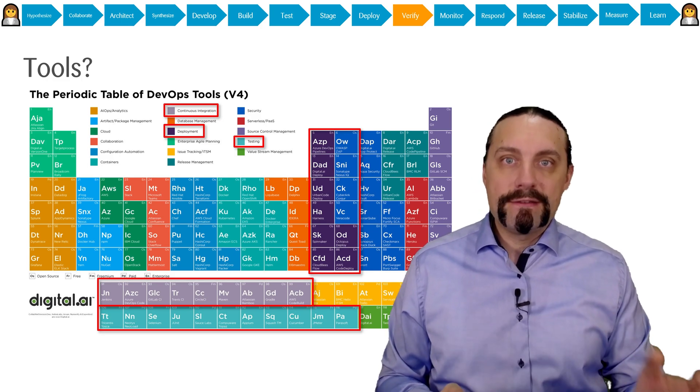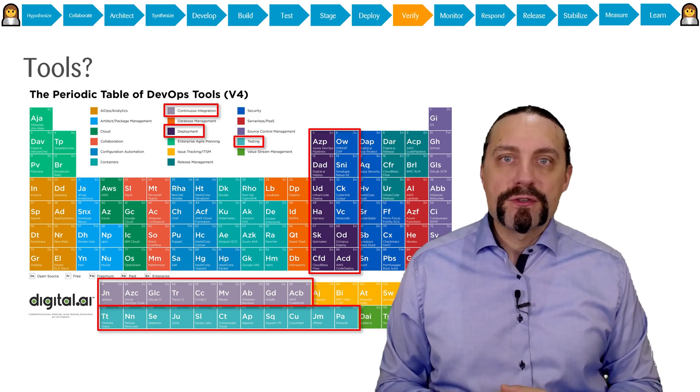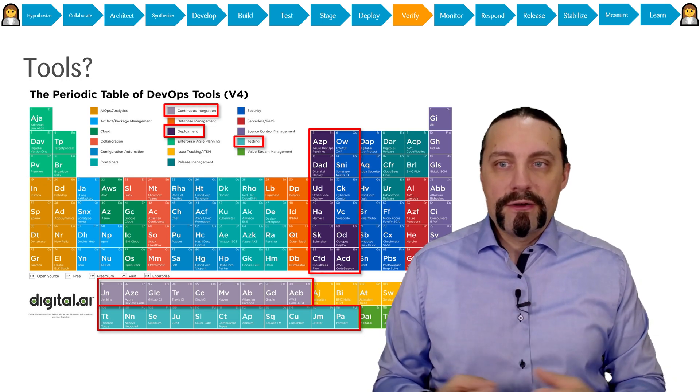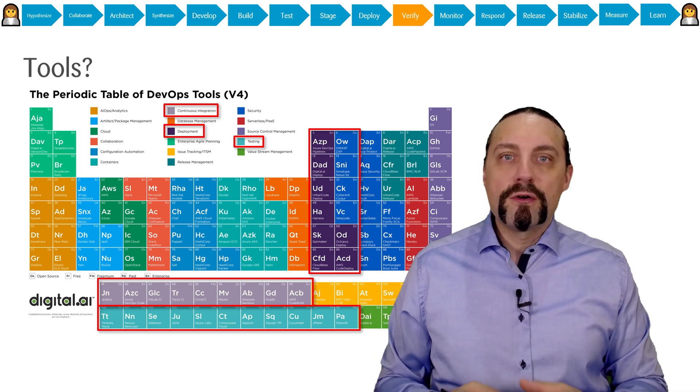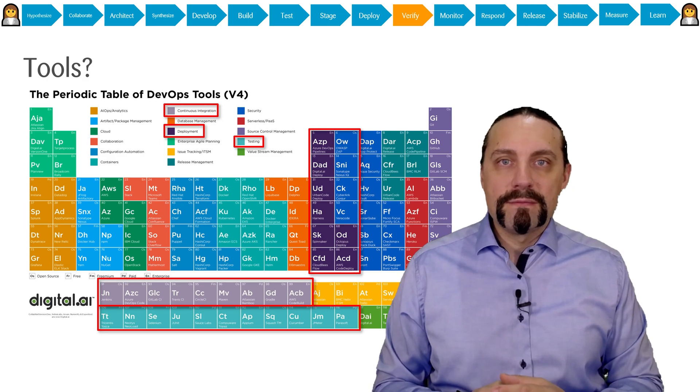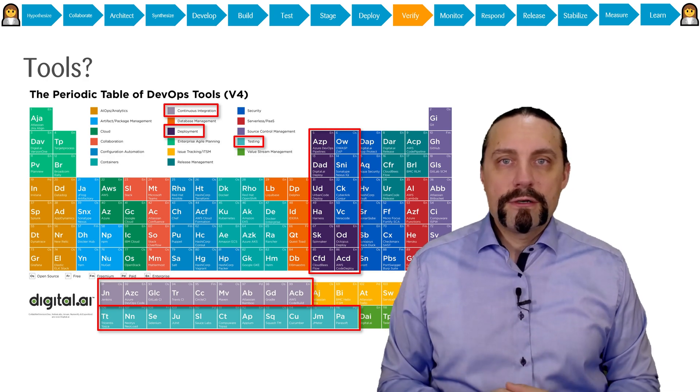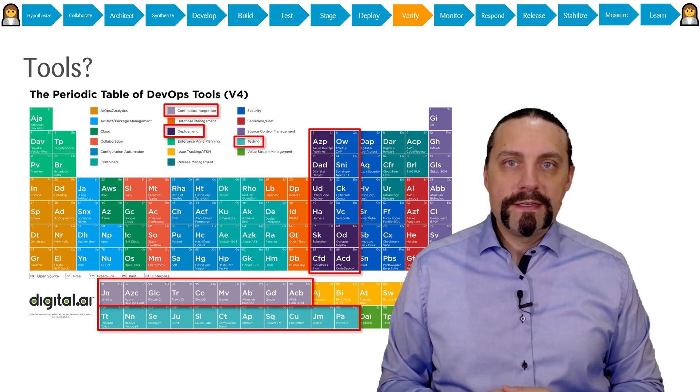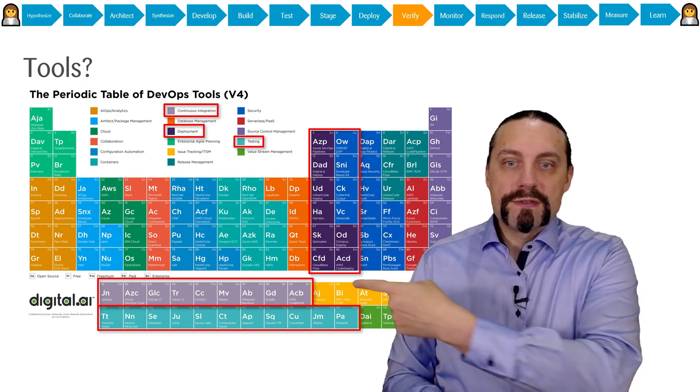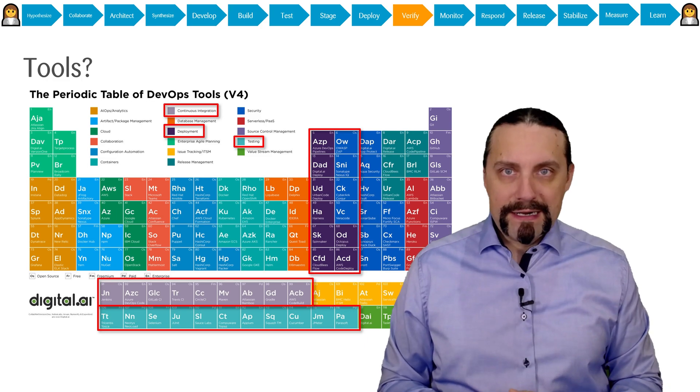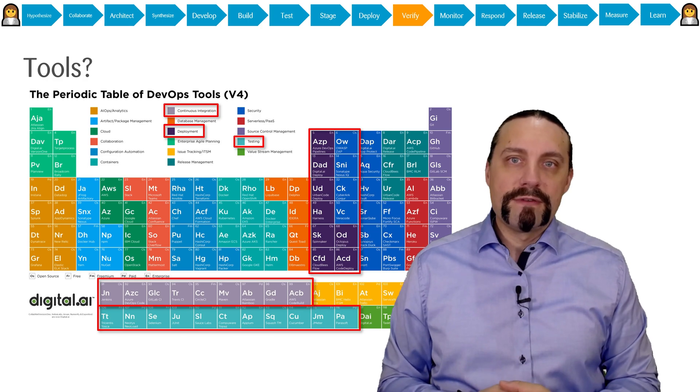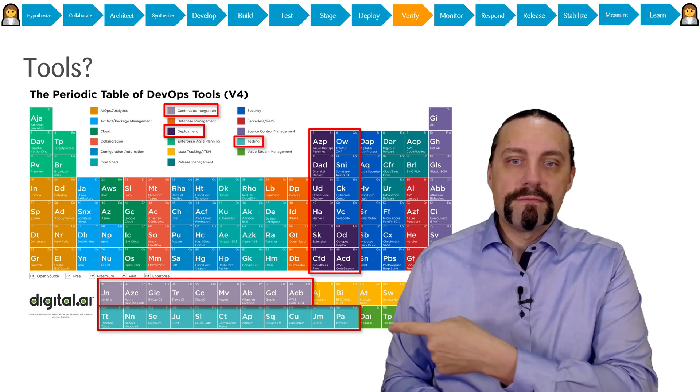You can see here the periodic table of DevOps tools. Of course, these are the most common used tools and there are more tools out in the market than shown here. When it comes to verifying our functionality in production, we of course need to have the continuous integration tools which you can see here. We need to have our continuous deployment tools which you can see here, and we need to have a good set of testing tools which you can see here.